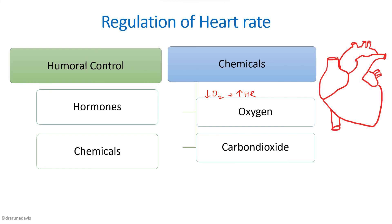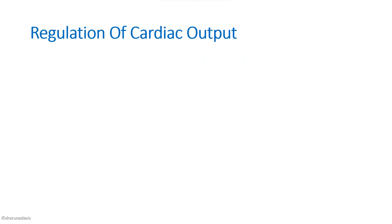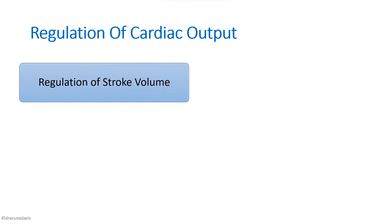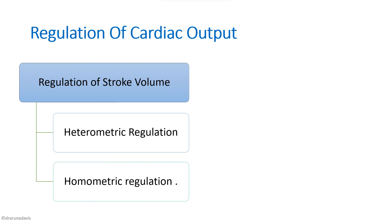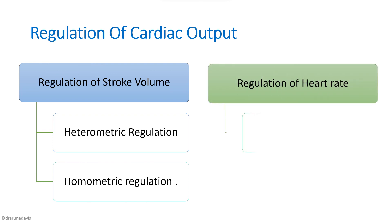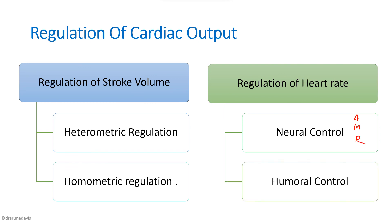Carbon dioxide has direct and indirect effects on the myocardium, generally depressing it. Acidosis also depresses the myocardium. To summarize, when answering a question on regulation of cardiac output, write about regulation of stroke volume (heterometric and homometric regulation), and regulation of heart rate covering autonomic control, medullary control, reflex control, and humoral control including hormones and chemicals.